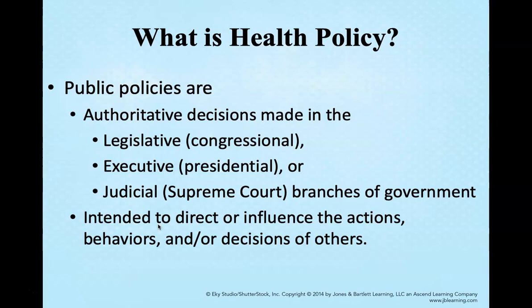The second branch that public policies come from is the executive or presidential branch of the government. The third is the judicial branch, which is also the Supreme Court. All public policies are created to either direct or influence how people act, how their behaviors should be carried out, and to influence the decisions of others. One example is the executive order by Governor Cuomo regarding social distancing in response to the COVID-19 pandemic. We will have a more focused discussion on the legislative branch shortly.